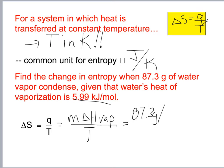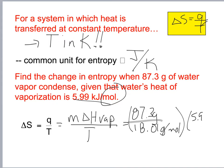I need to convert grams to moles: 87.3 grams divided by 18.01 grams per mole. Then multiply by 5.99 kilojoules per mole to cancel the moles.